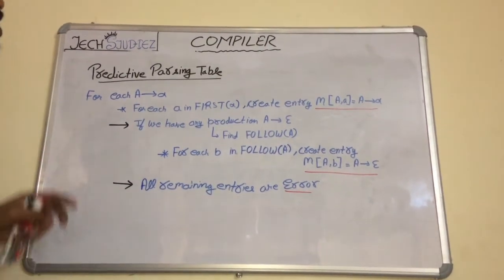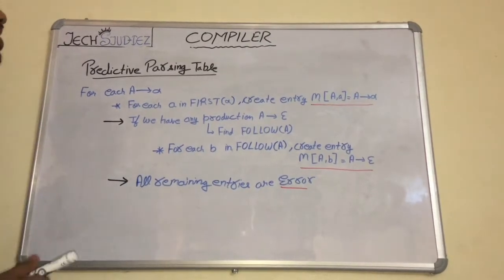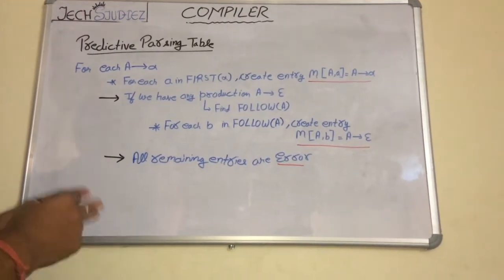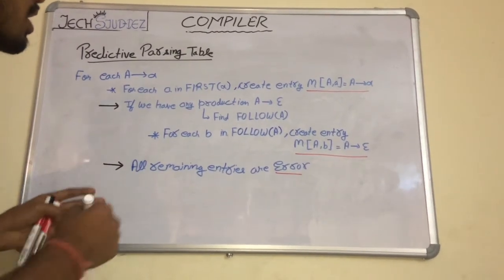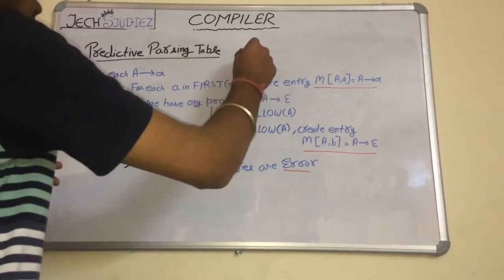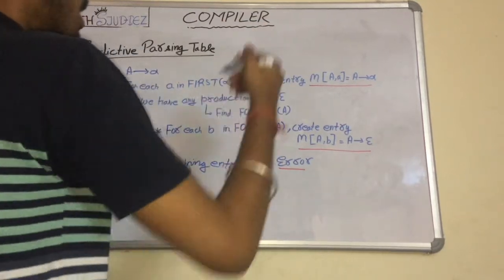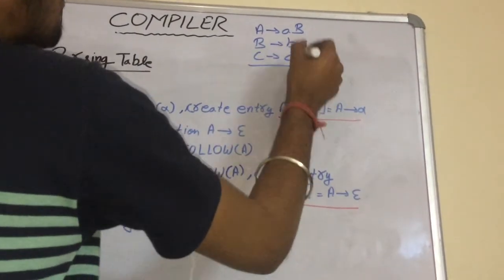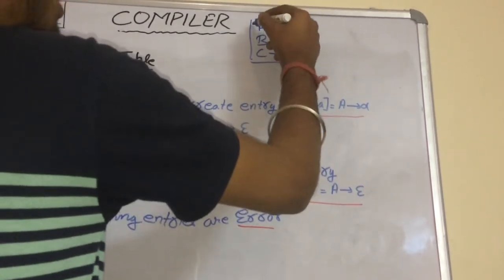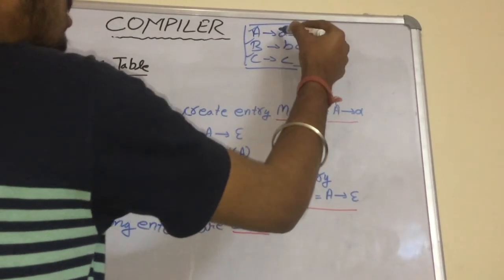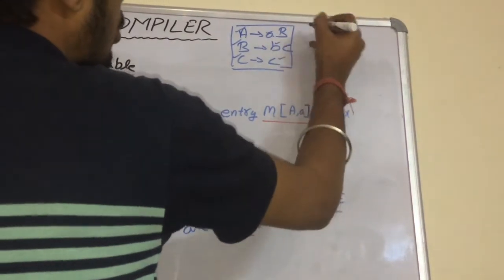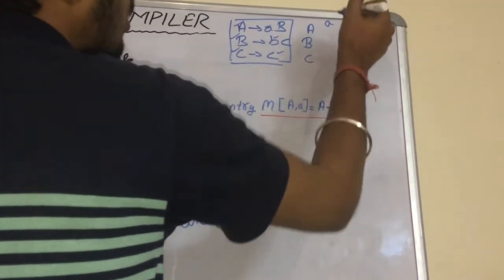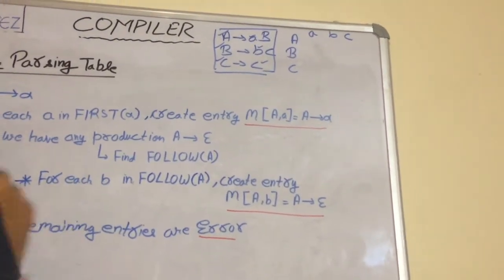Hello guys, welcome to Tech Studies. Today we will study about predictive parsing tables and how to construct one. First, we have to check how many terminal symbols and non-terminal symbols are in the grammar. Put all the non-terminal symbols on the left-hand side vertically, and put all the terminal symbols at the top of the table.